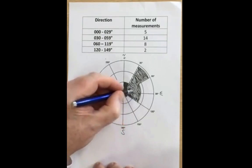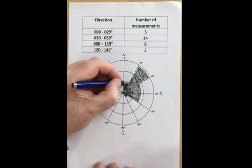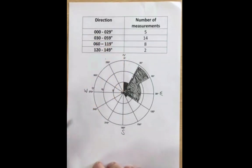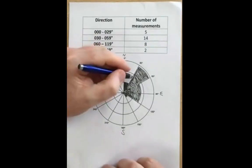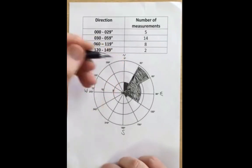So we now have our rose diagram plotted. You can see from this example that it gives a very clear indication of the direction of whatever it is you're measuring. You almost don't really need the numbers that are marked on there because we can see that predominantly this is to the northeast. It's a very clear way of showing directional data.